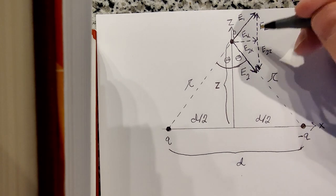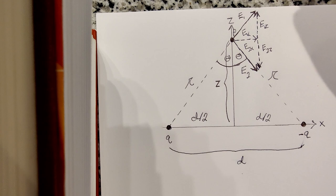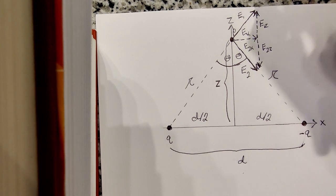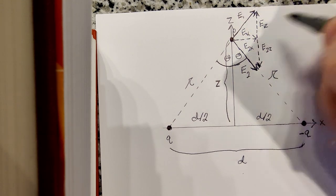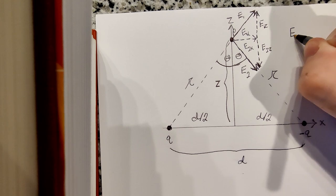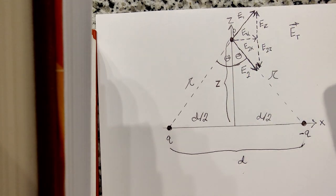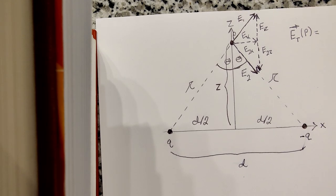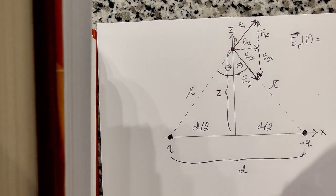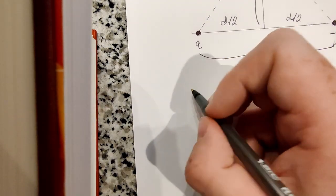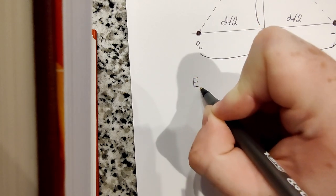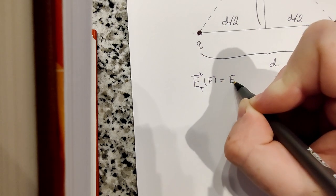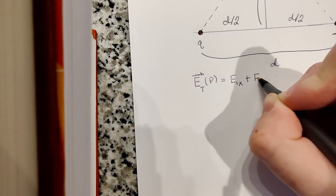So already, if the vertical components cancel out, we know that the only contribution to the total electric field, using the principle of superposition, are the two x-components of each field. So E total, the total electric field at our point in space P, which I'll draw it down here since you guys can't see it up there. So the total electric field at our point P will just be E1x plus E2x.